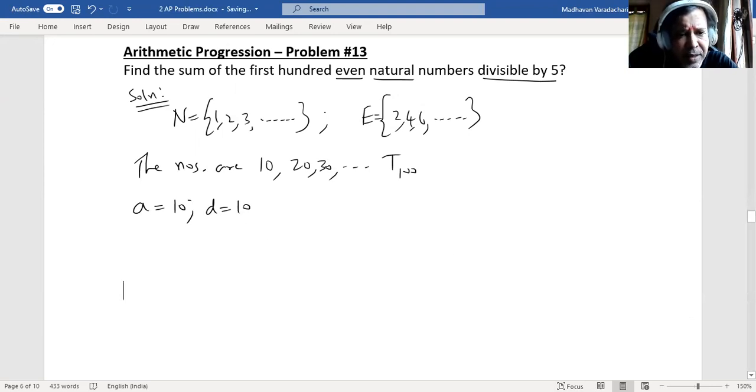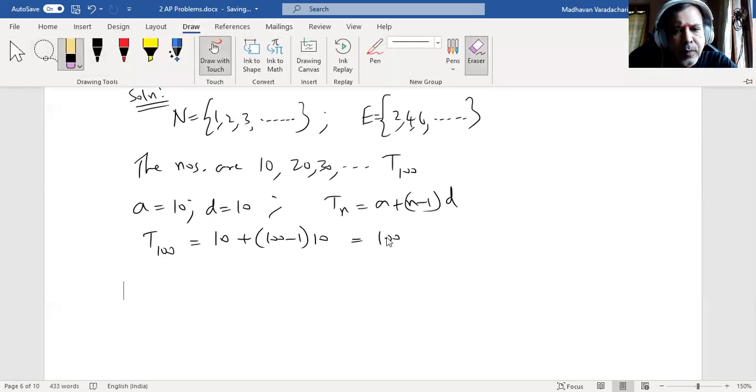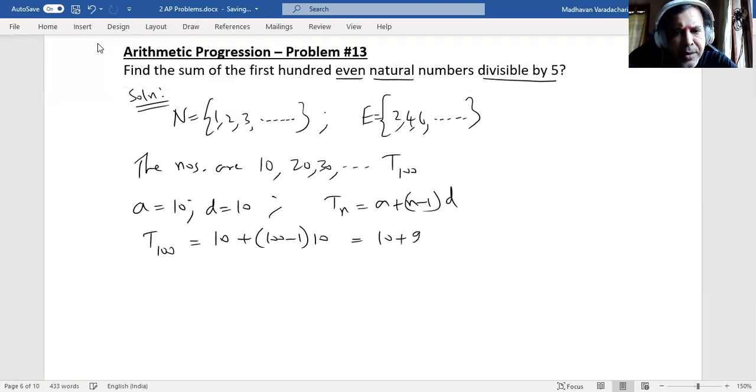First, we find the 100th term. The formula is TN = A + (N-1)D. So T100 = 10 + (100-1) × 10 = 10 + 99 × 10 = 10 + 990 = 1000. The 100th term is 1000.